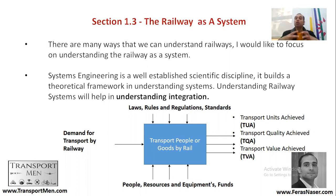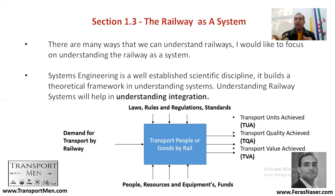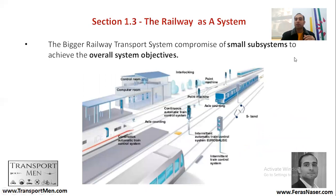With these three components entering together, there will be an output. These are theoretical units — not standard units in common use — but they help you understand the output of the railway as a system. The outputs are: transport units achieved, transport quality achieved, and transport value achieved.